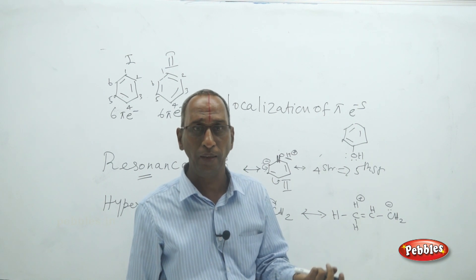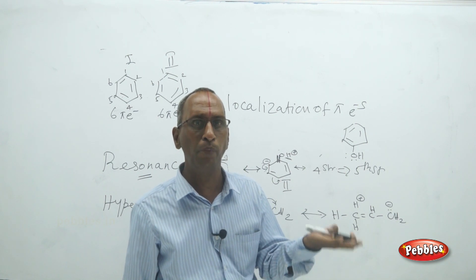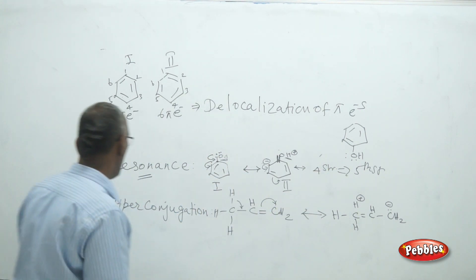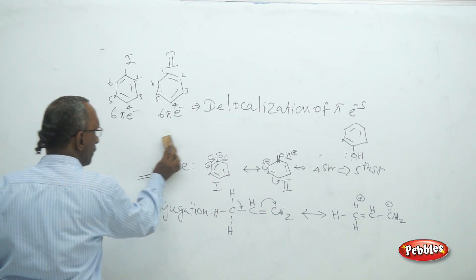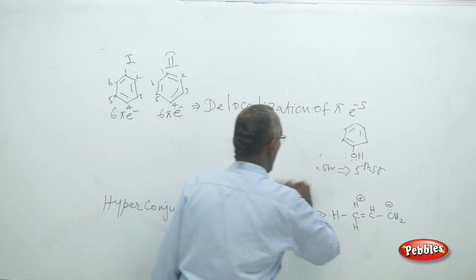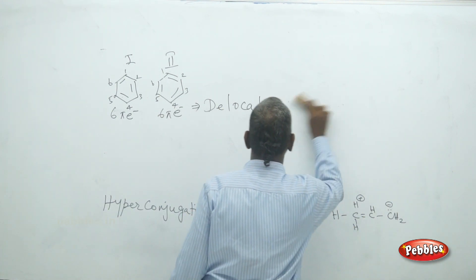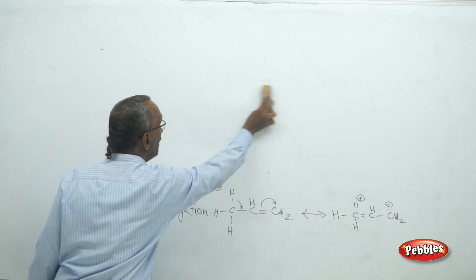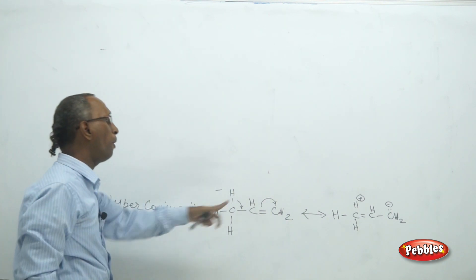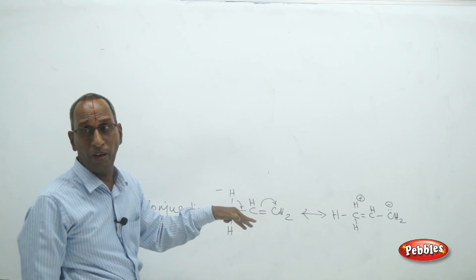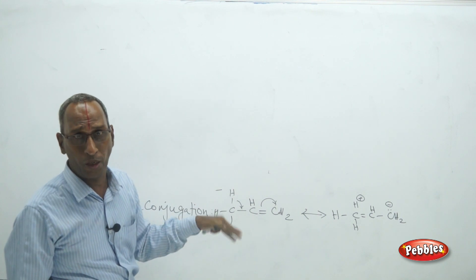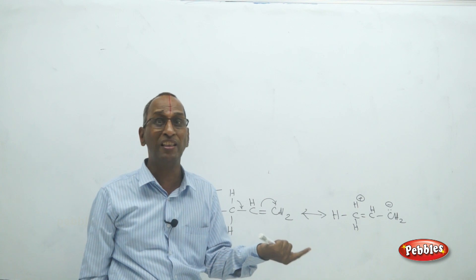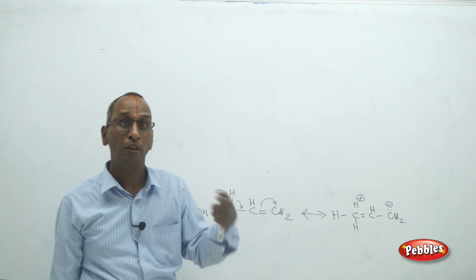Benzene is highly stable because of resonance. Comparing benzene and cyclohexane, benzene is more stable because of resonance. The last important phenomenon is hyperconjugation — this is also delocalization of pi electrons, but in an open chain compound rather than a ring. That is the difference between resonance and hyperconjugation.